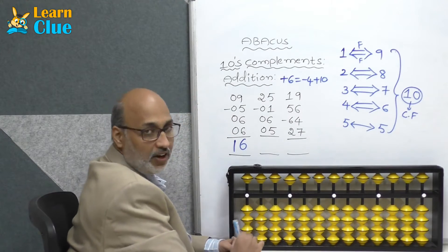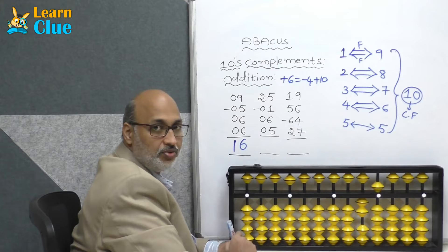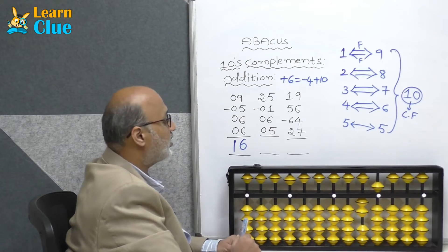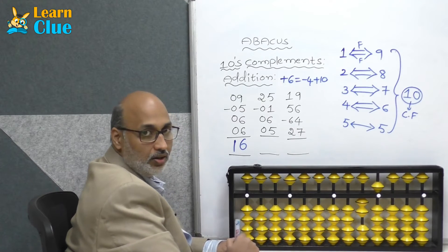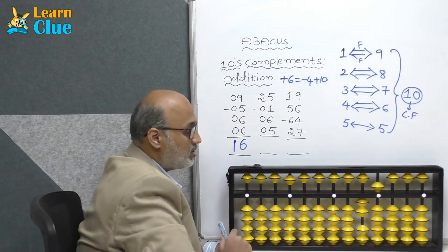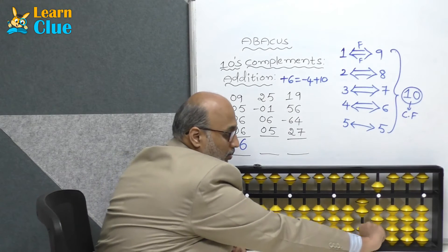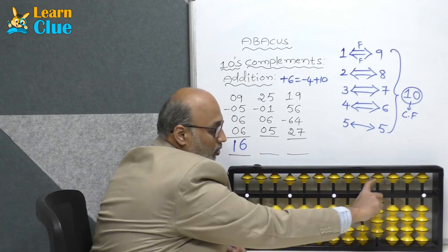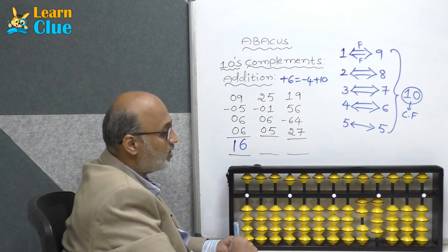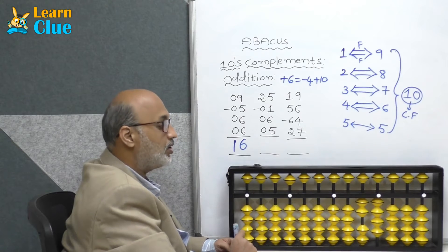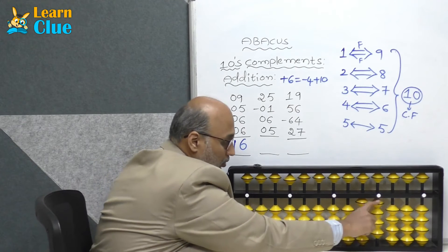Okay, 25 — that is 20 plus 5. Minus 1: try in 5s complements. What is the technique of minus 1 in 5s complements? Plus 4 minus 5. Now they are asking plus 6 — who is the friend of 6? 4. So minus 4.